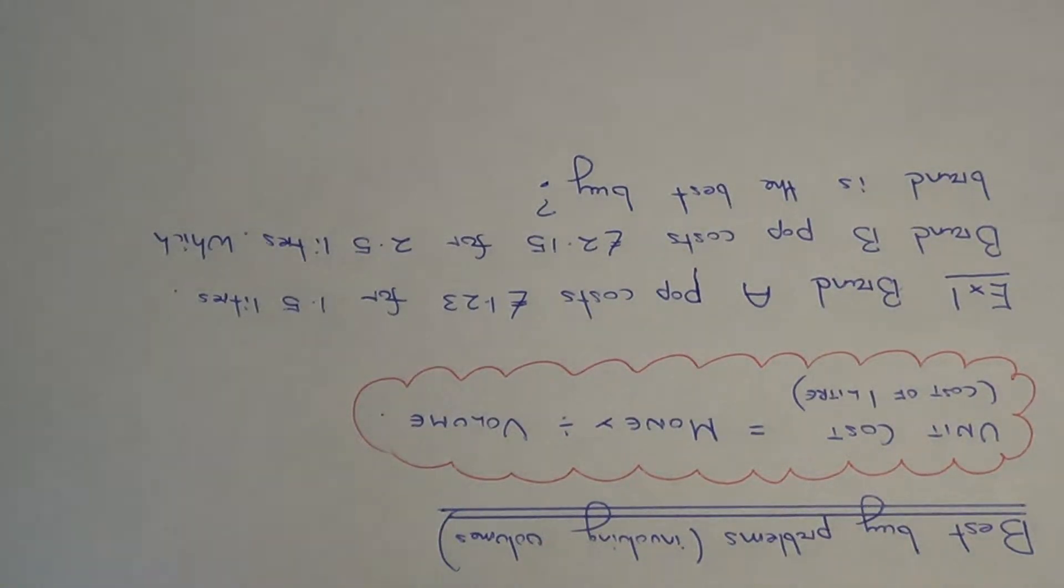Now we're going to look at a Best Buy problem which involves volumes. Let's read out the first example. Brand A Pop costs £1.23 for 1.5 litres and Brand B Pop costs £2.15 for 2.5 litres. We have to work out which brand of Pop is the Best Buy.